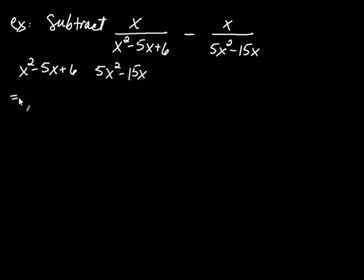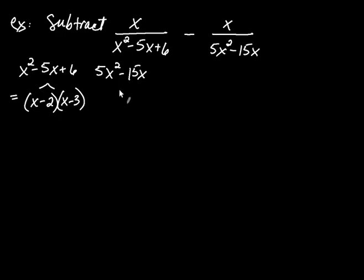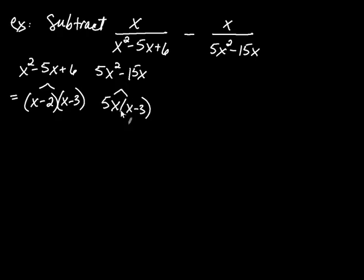You take both denominators and factor them. So x squared minus 5x plus 6 factors as x minus 2 times x minus 3 — and notice those are prime polynomials, so we're done there. Then 5x squared minus 15x: these have in common a 5 and an x, so it factors as 5x times x minus 3. So we've completely factored this polynomial as 5x times x minus 3.